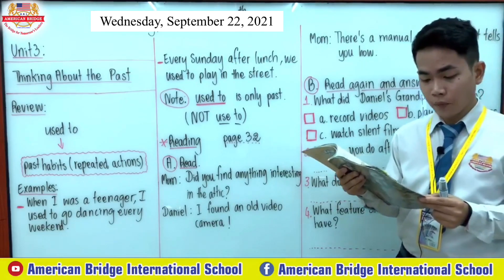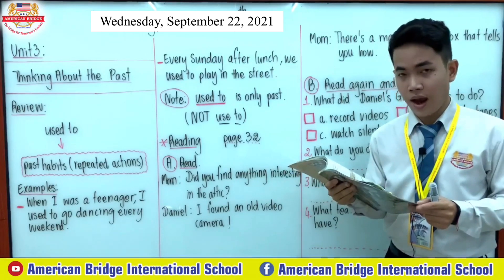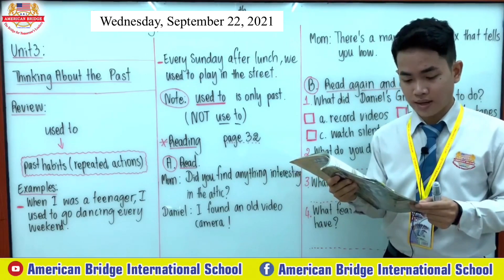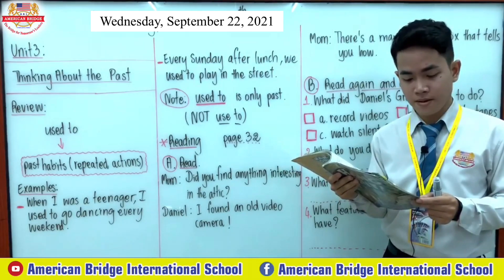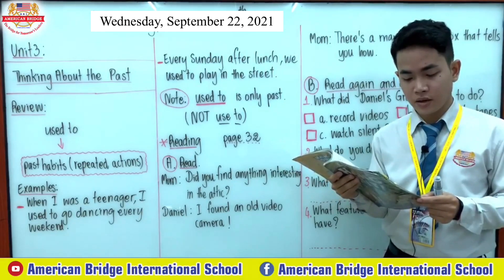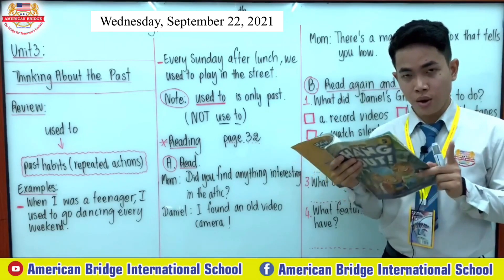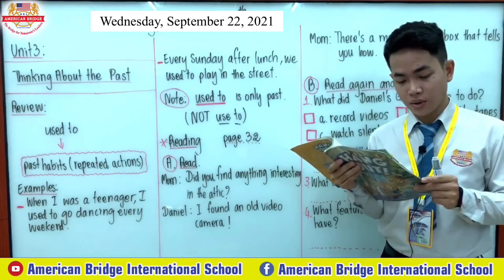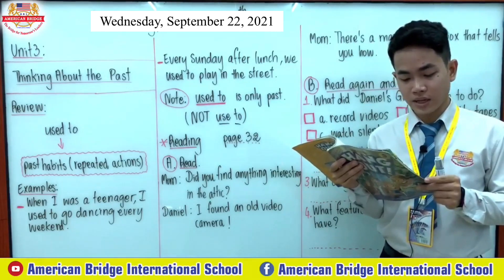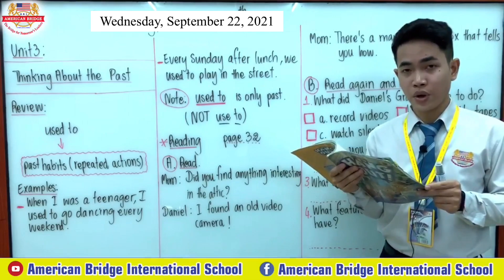Step one: Load a VHS tape. A — Press the eject button. B — Load the VHS tape. C — Close the door and press lock. Note: You cannot load or unload a VHS tape when the video camera is in record mode.